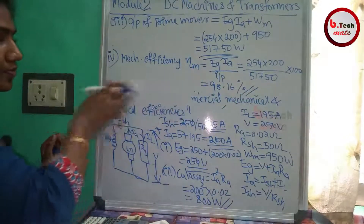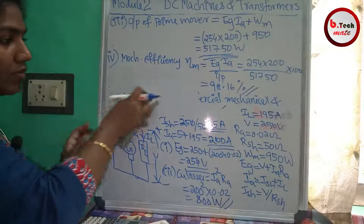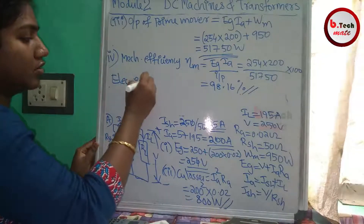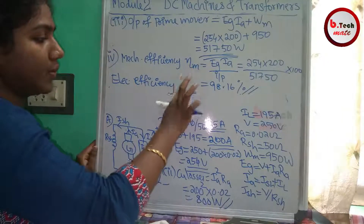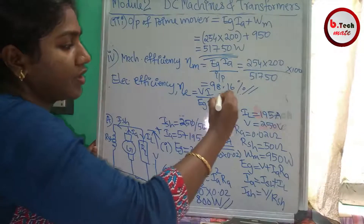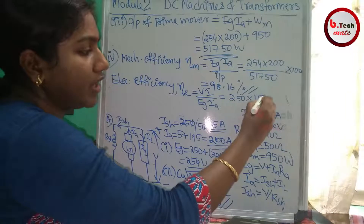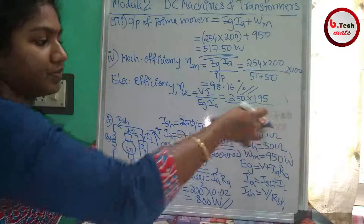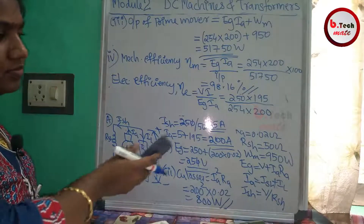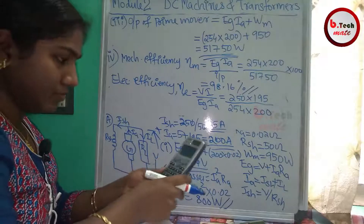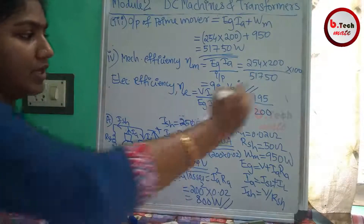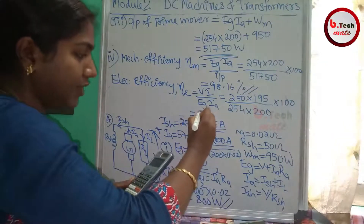Next is electrical efficiency. Electrical efficiency ηE = electrical output (VI) / EgIa = 250 × 195 / 254 × 200 × 100% = 48750 / 50800 × 100 = 95.96%.